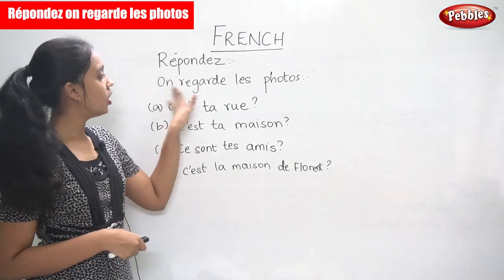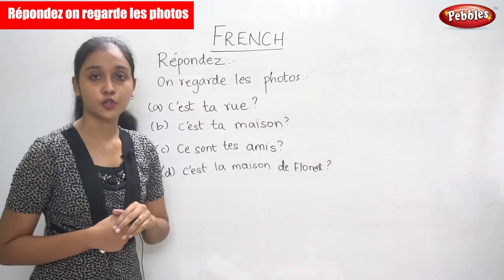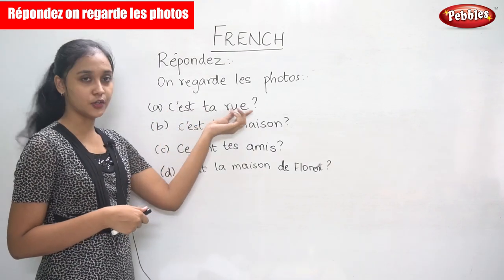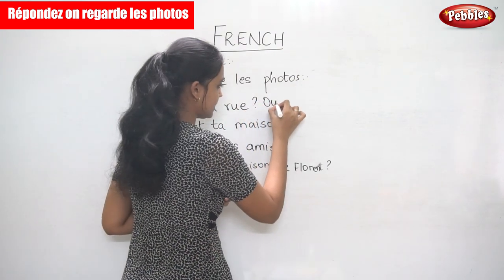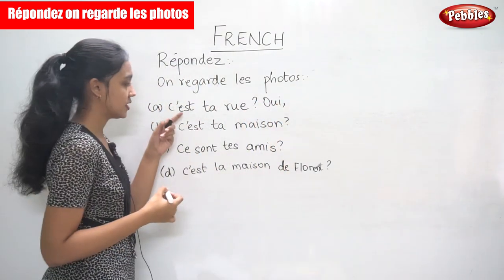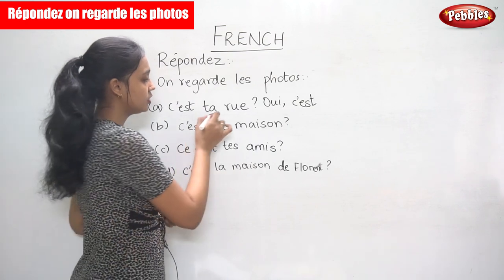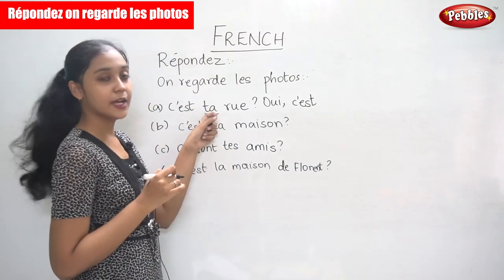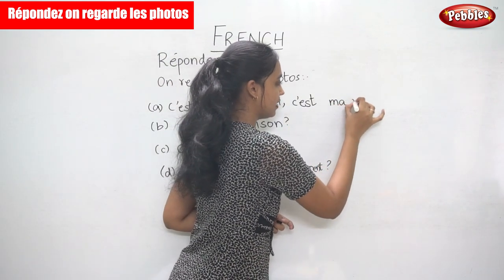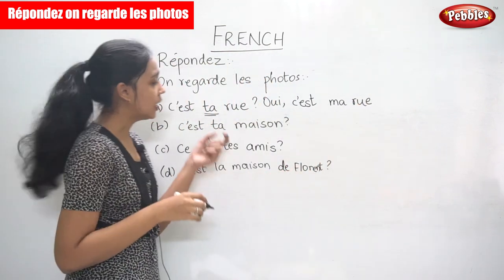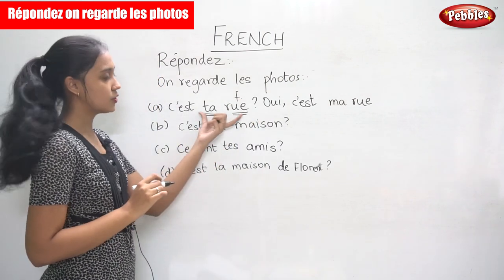This is a situation where we are looking at the photos — 'on regarde les photos.' The question is about your street, and we are going to answer yes. When you are answering, 'ta' is the second person singular, so it becomes first person. 'Ta' becomes 'ma rue.' Why do we use 'ma' here? Because 'rue' is feminine.